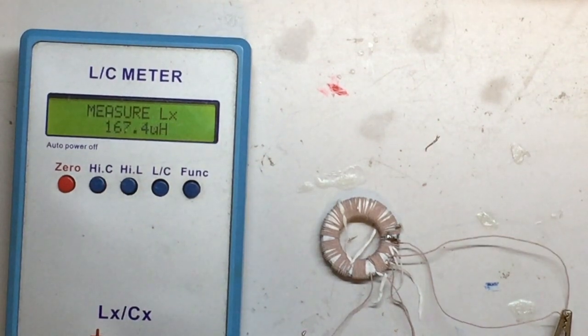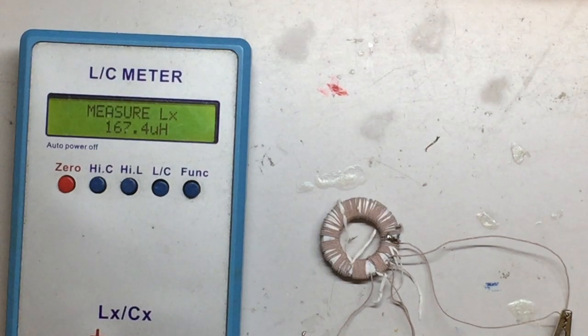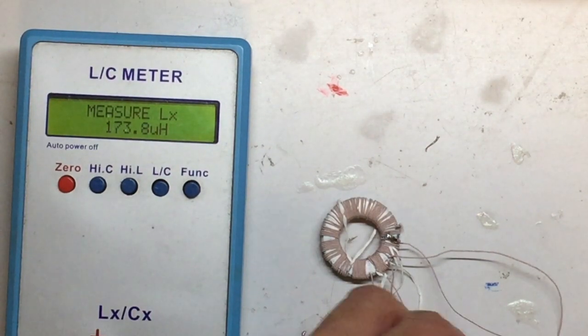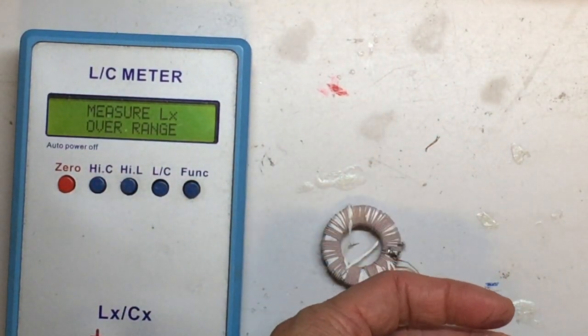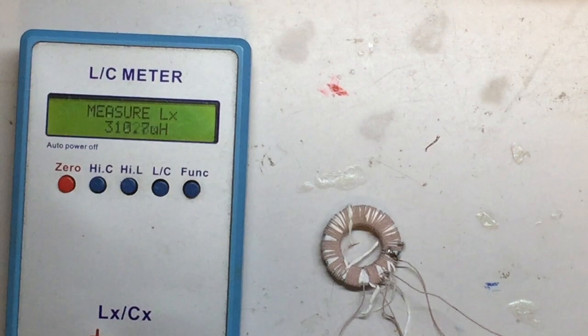It will be much easier if you've got an LC meter. Just measure the inductance when you think you have run sufficient turns. For our case matching with a 560 pF variable capacitor, 160 microhenry is enough.